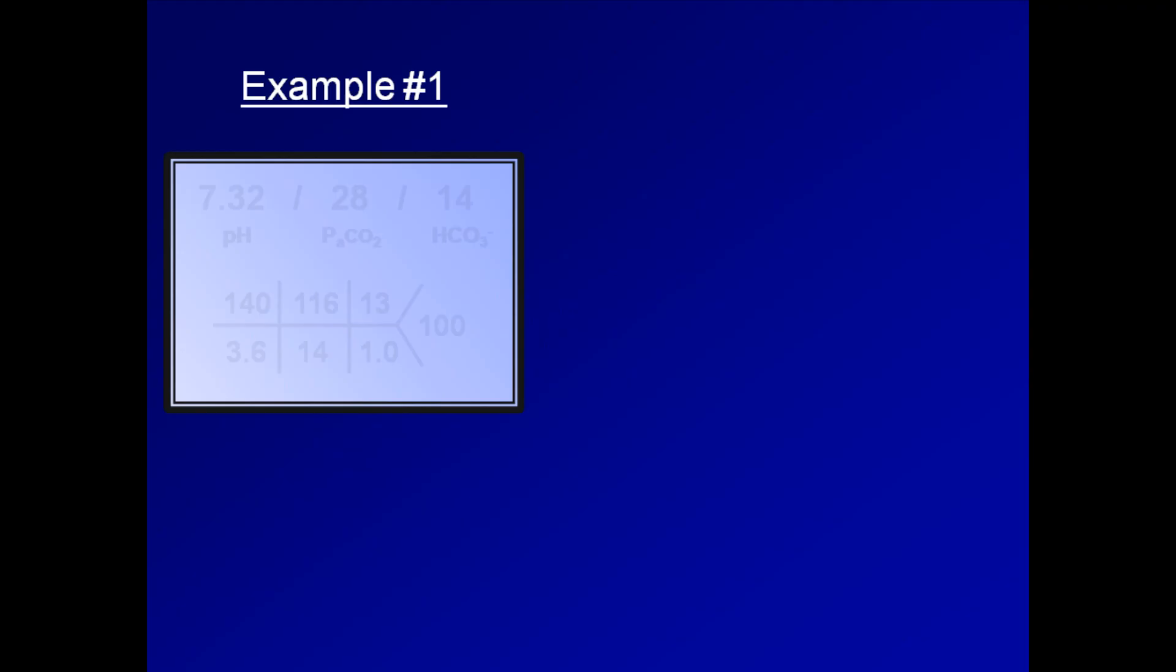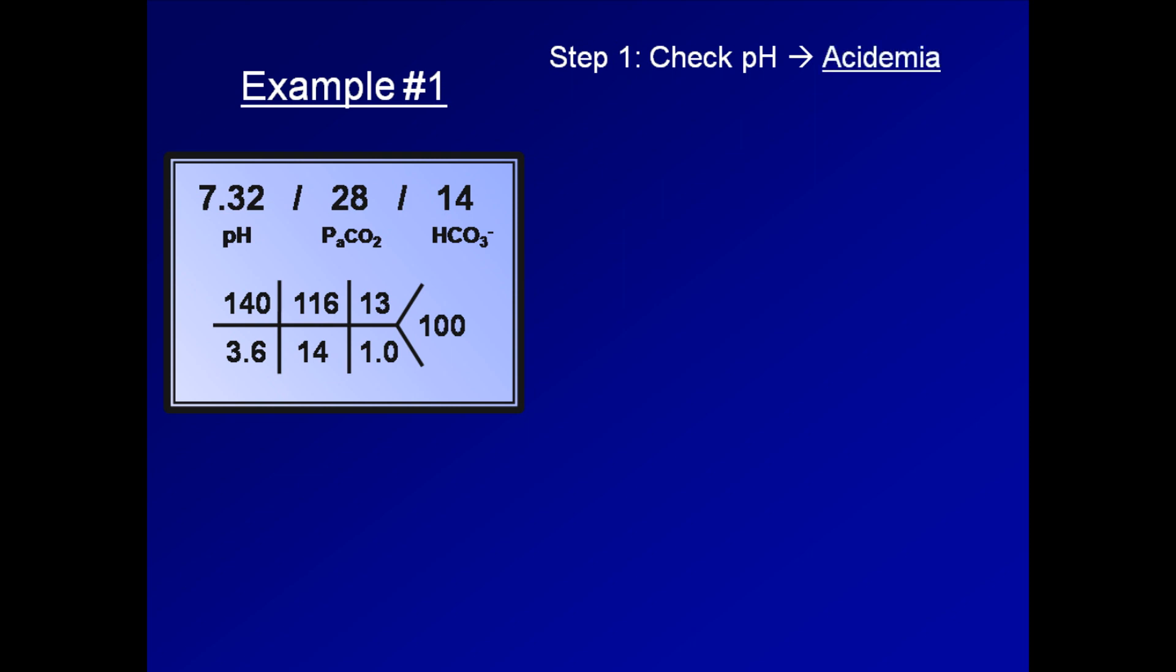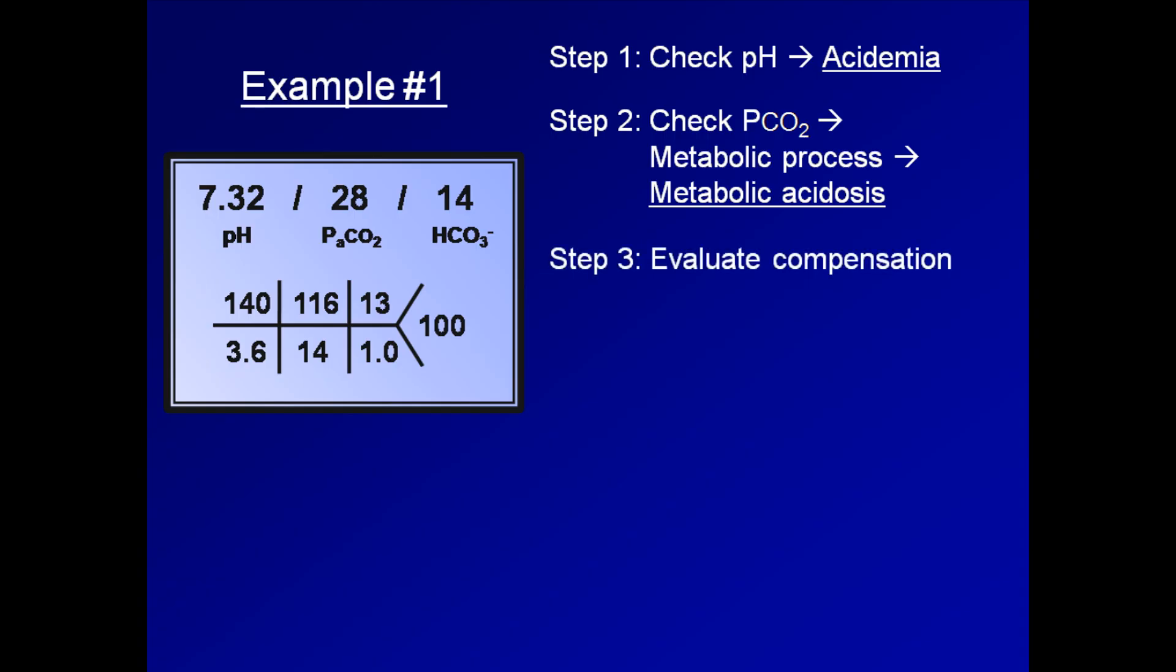So, here is example number one. We have a pH of 7.32, a pCO2 of 28, and a bicarb of 14. Step number one, as always, is to look at the pH. Here we immediately see this patient has an acidemia. Step number two is the check of the pCO2. Since the pCO2 is deranged in the same direction as the bicarb, the process is metabolic, and thus a metabolic acidosis. From the last lecture, you know that step number three is to evaluate compensation. For a metabolic acidosis, we use Winters formula, which asks whether the measured pCO2 is approximately equal to 1.5 times the bicarb plus 8. 1.5 times 14 is 21, plus 8 is 29. So, yes, the equation holds true. We conclude that we have appropriate compensation.